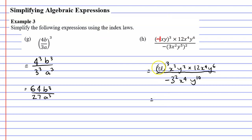For our next line of working: what's negative 1 to the power of 3? This means negative 1 times negative 1 times negative 1. Multiplying it three times gives a single solution of negative 1. So we change that to just negative 1, then x cubed, y cubed, times 12, x to the power of 4, y to the power of 6.